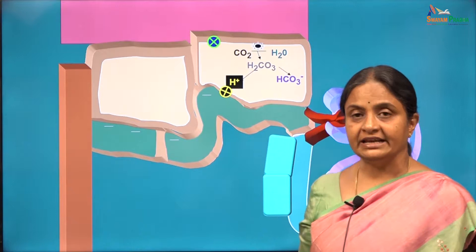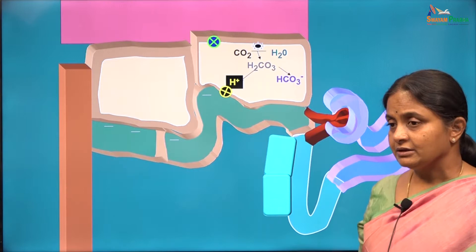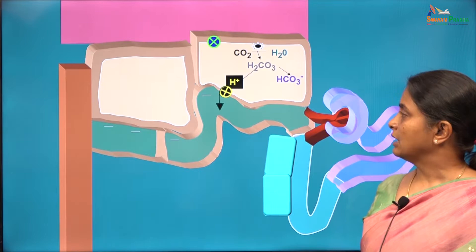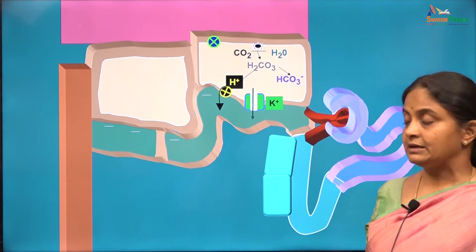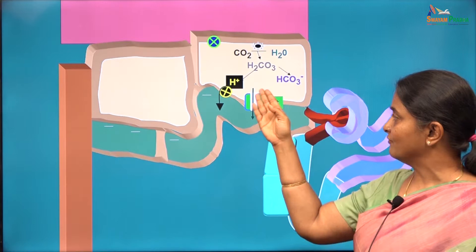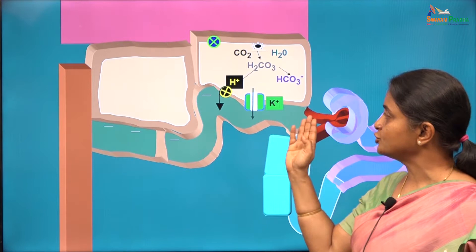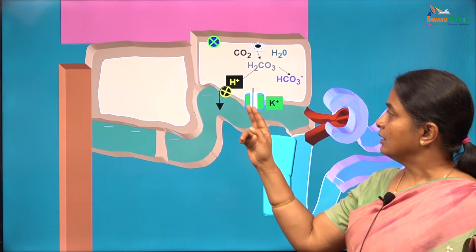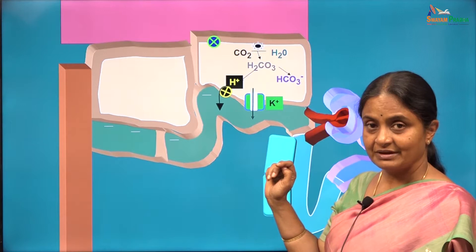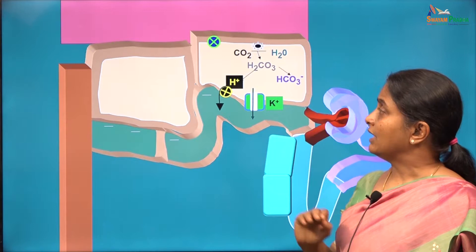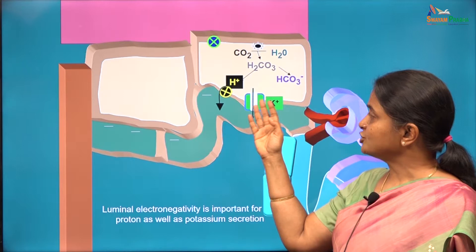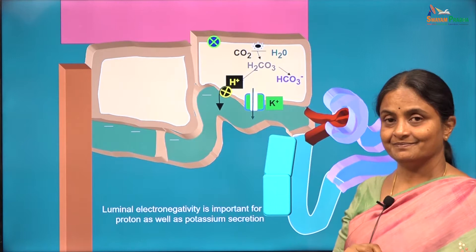There is more to this luminal electronegativity. This electronegativity not only pulls down protons but also favors potassium extrusion from the cells. Potassium from the cells will move to the tubule via potassium channels on the luminal border of the distal tubular cell — this is the mechanism to excrete potassium in the body. Protons and potassium compete with each other for extrusion aided by this electronegativity. Therefore, if elimination of one has to increase, elimination of the other will suffer.